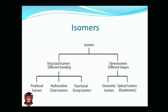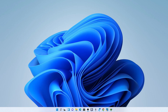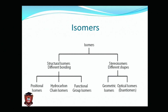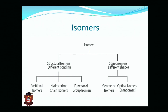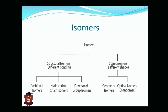The additional types are: three — functional group isomerism; four — metamerism; five — tautomerism; and six — ring-chain isomerism. I just added three to what you already have there.